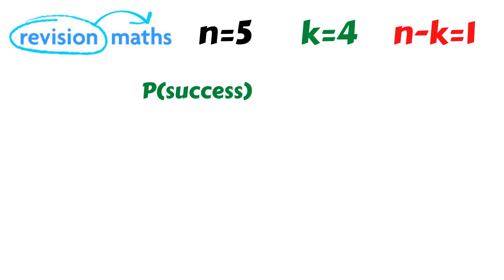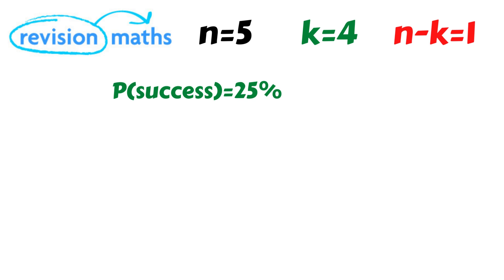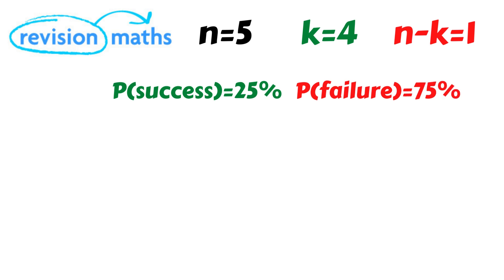Now let's look at the probability of success. Each race has four possible winners and only one is the actual winner, so there is a one in four chance that the correct winner is picked. The probability of success is one in four, or twenty-five percent. Since probability of success and probability of failure must equal one hundred percent, the probability of an incorrect guess must be seventy-five percent.